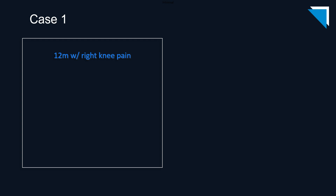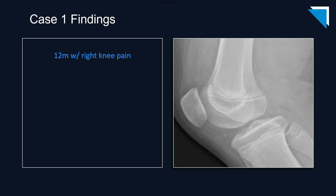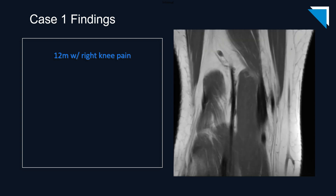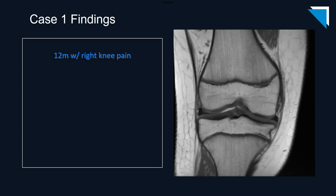Our first patient is a 12-year-old boy with right knee pain. Here is the AP radiograph of the right knee and the corresponding lateral view. An MRI of the knee was subsequently obtained. Here are the coronal T1-weighted images.